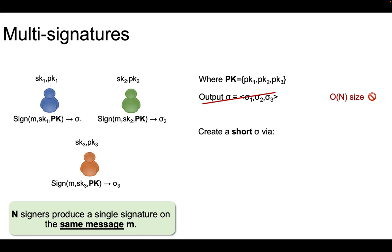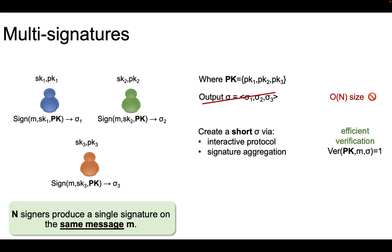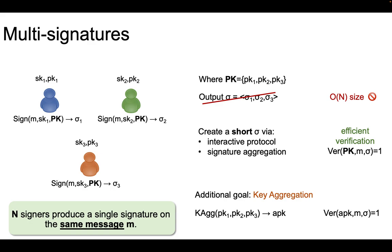There are two main techniques when constructing multisignatures. One is to assume an interactive protocol between the signers in order to compute the common multisignature. The second technique is to assume a signature aggregation algorithm that can be executed by any designated party. In both cases, the goal is to have an efficient verification algorithm that, on input the collection of public keys of the signers, can verify the multisignature. Certain multisignature schemes also support public key aggregation, where a mechanism constructs a very short aggregated public key as well, via a key aggregation algorithm.